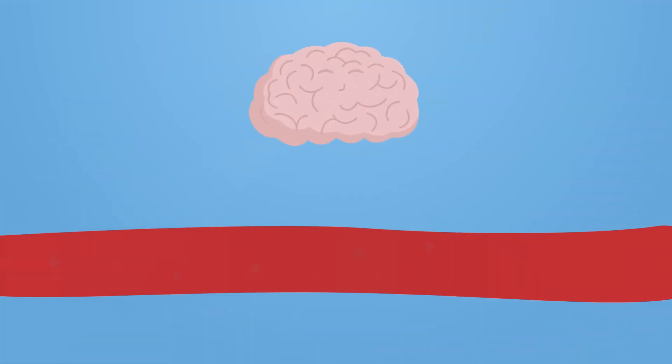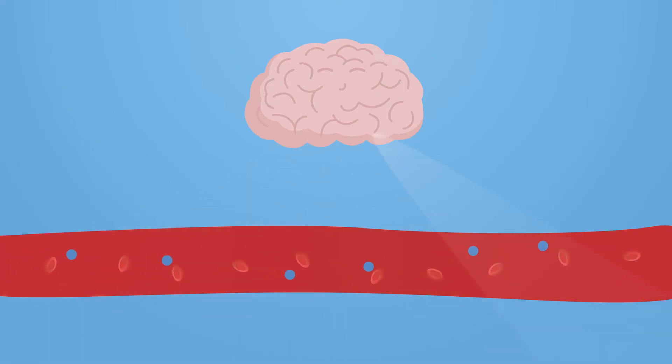The brain monitors the water content of the blood and instructs the pituitary gland to secrete ADH into the blood according to how much is needed.